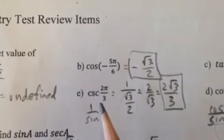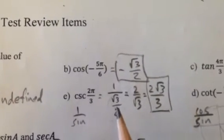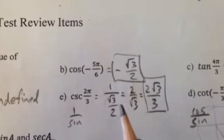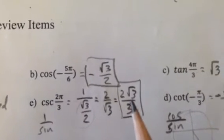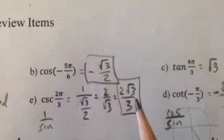Cosecant of 2pi/3 is 1 over the sine of 2pi/3, which is root 3 over 2. So it's just the reciprocal of that, 2 over root 3, but we rationalize the denominator. Gives us 2 root 3 over 3.